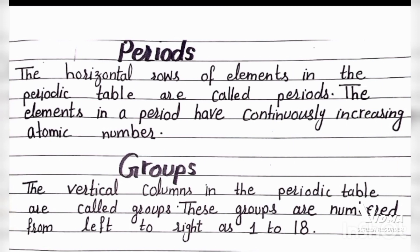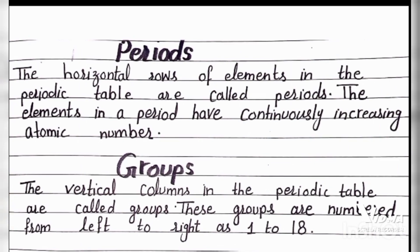The horizontal rows of elements in the periodic table are called periods. Elements in a period have continuously increasing atomic number. There are a total of seven periods in the periodic table, and as we move from left to right, the atomic number continuously increases.